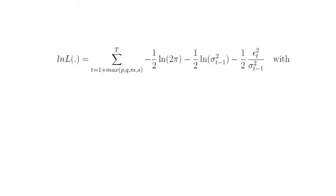So the joint log-likelihood function coincides with that familiar expression. The only thing new is that the sum starts at t equals 1 plus the max of p, q, m, s.